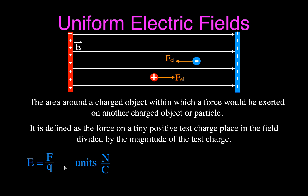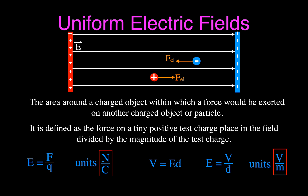There's another equation with equivalent units we can use to define the electric field, applicable specifically to parallel plates. The voltage, or potential difference between the two plates, equals the electric field strength times the distance between the plates: V equals E times d. Rearranging for E gives voltage divided by distance. Since voltage is in volts and distance in meters, we get a second equivalent unit: volts per meter.